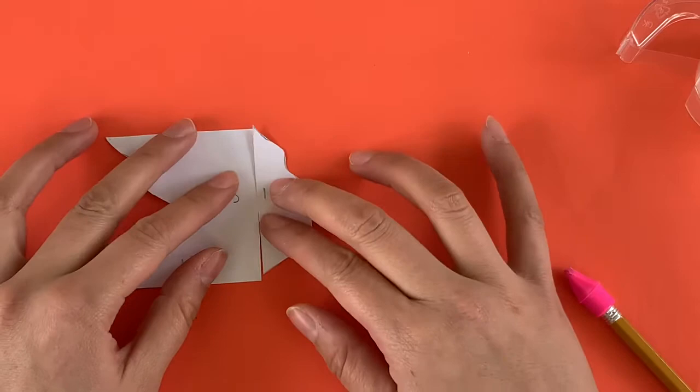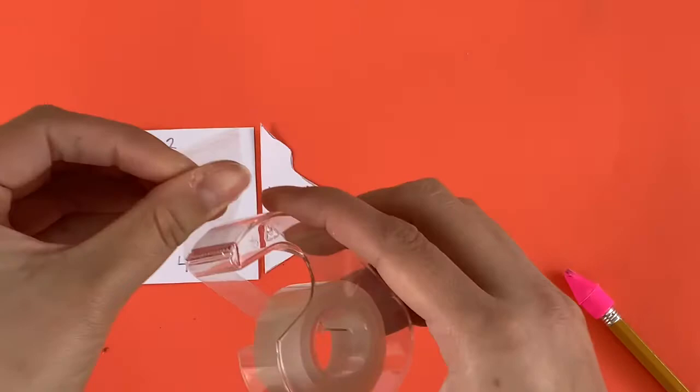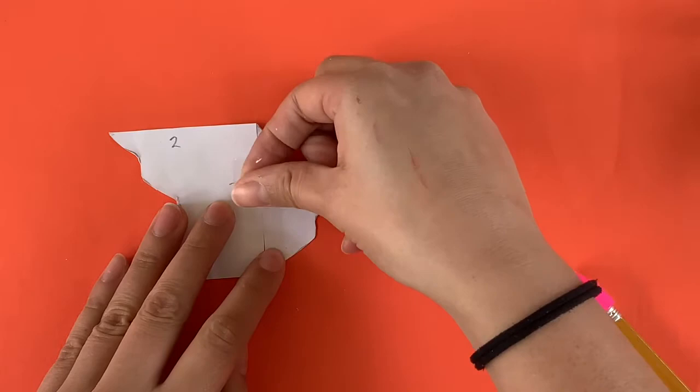Once you have it lined up really nice, this is where you're going to use your tape and you want to attach it. Try not to have any tape that's overlapping on the top or bottom either because that will affect the way your tessellation works.